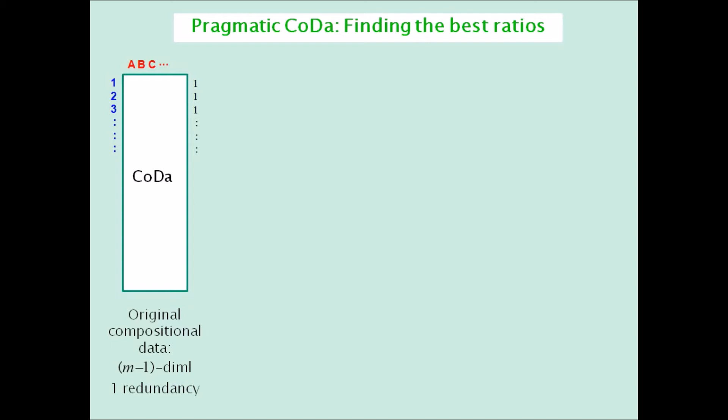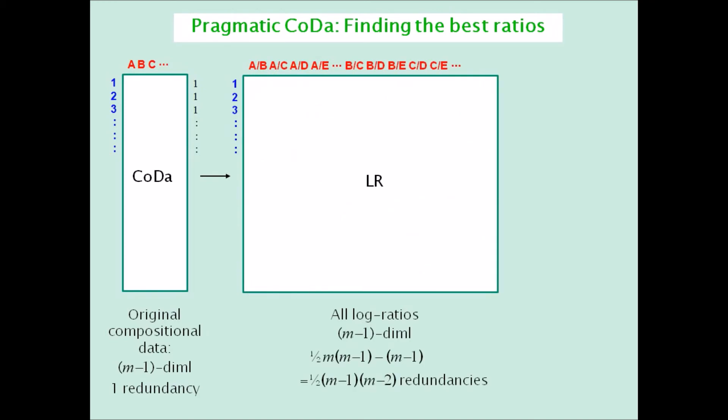We know that it generates all the pairwise log ratios, which is also m-1 dimensional. So here there are half m times m-1 minus m-1, that's equal to a half times m-1 times m-2 redundancies. And that's a lot of redundancies.